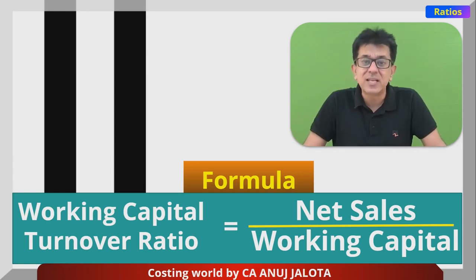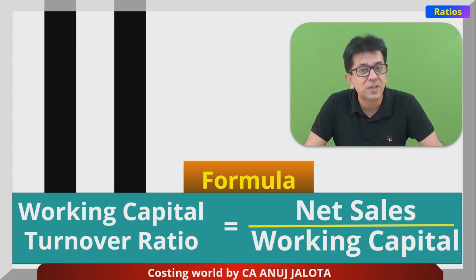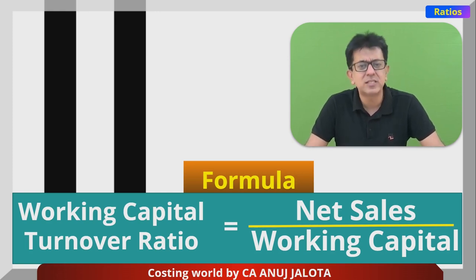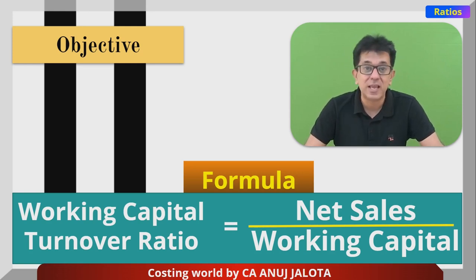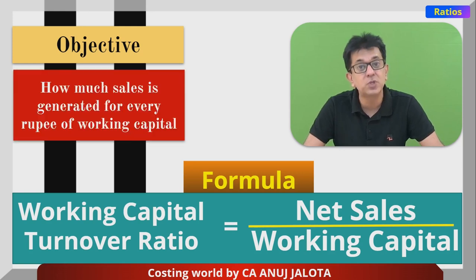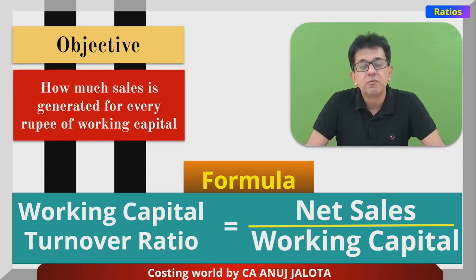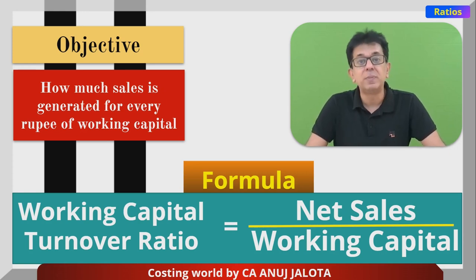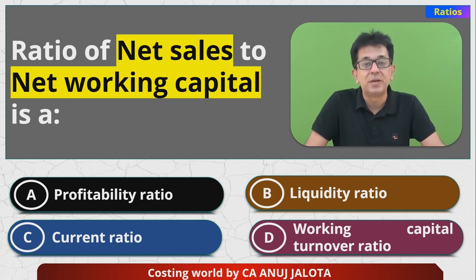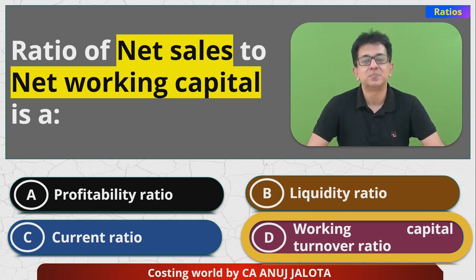For example, if net sales is 10 lakhs and working capital invested is 1 lakh, the ratio is 10 times, meaning for every rupee invested you are generating sales of 10 rupees. The objective is: how much sales is generated for every rupee of working capital invested. Therefore, the ratio of net sales to net working capital is nothing but the working capital turnover ratio — the correct answer is D.